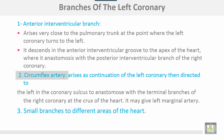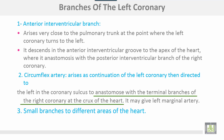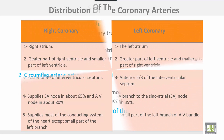The circumflex artery arises as a continuation of the left coronary, then is directed to the left in the coronary sulcus to anastomose with the terminal branch of the right coronary at the crux of the heart. It may give a left marginal artery, in addition to small branches to different areas of the heart.